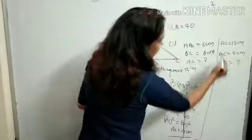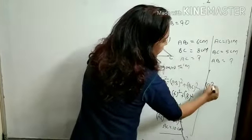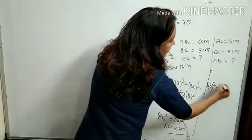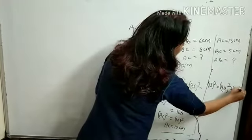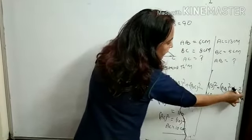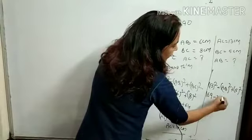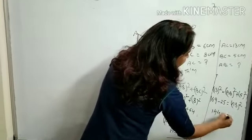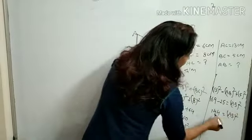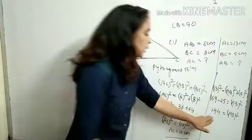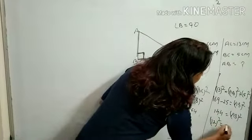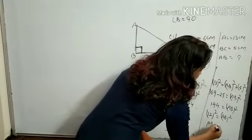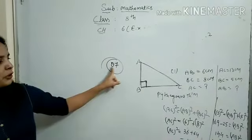In part two, AC = 13 and BC = 5 are given; find AB. Using Pythagoras: AC² = AB² + BC², so 13² = AB² + 5², giving 169 = AB² + 25. Therefore AB² = 169 − 25 = 144. Since 144 = 12², we get AB² = 12², so AB = 12 cm.